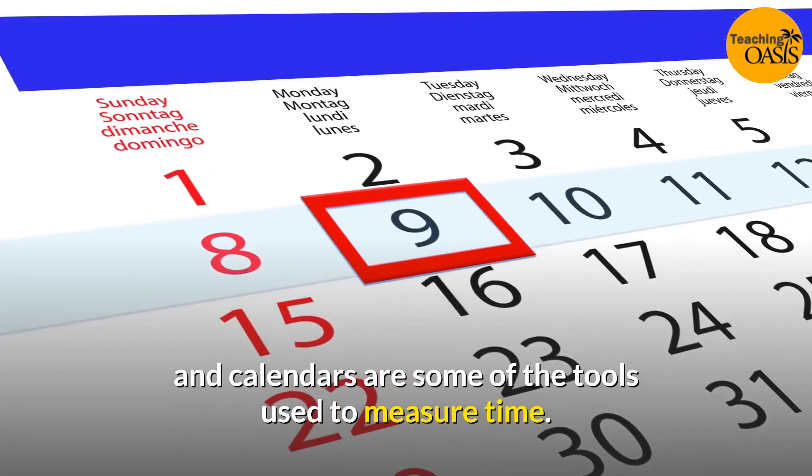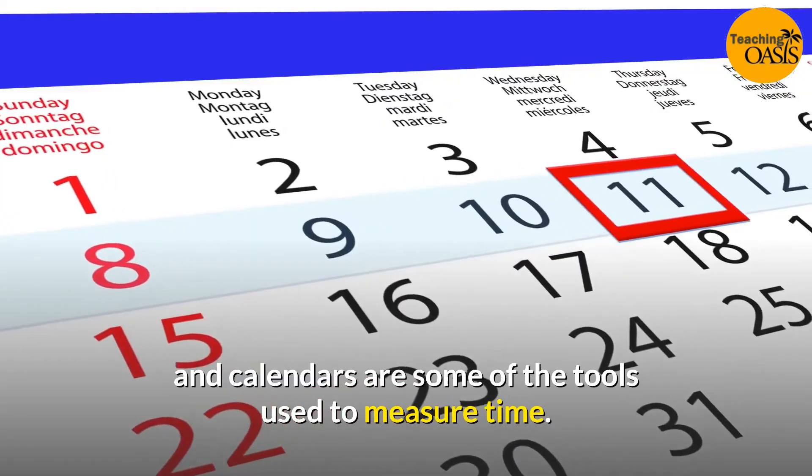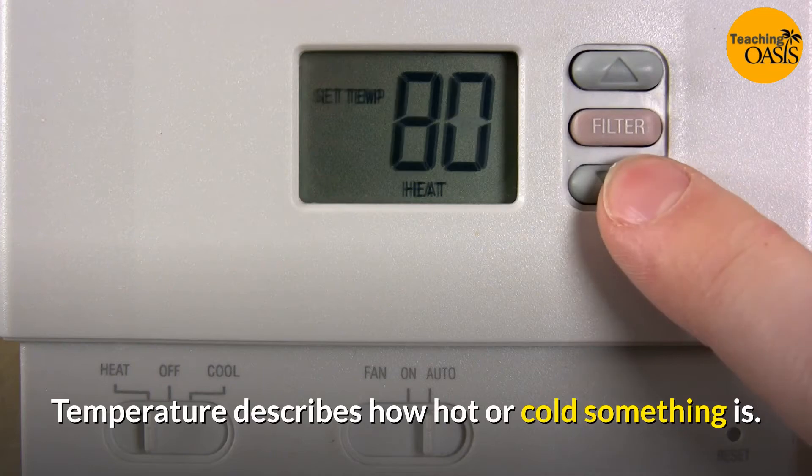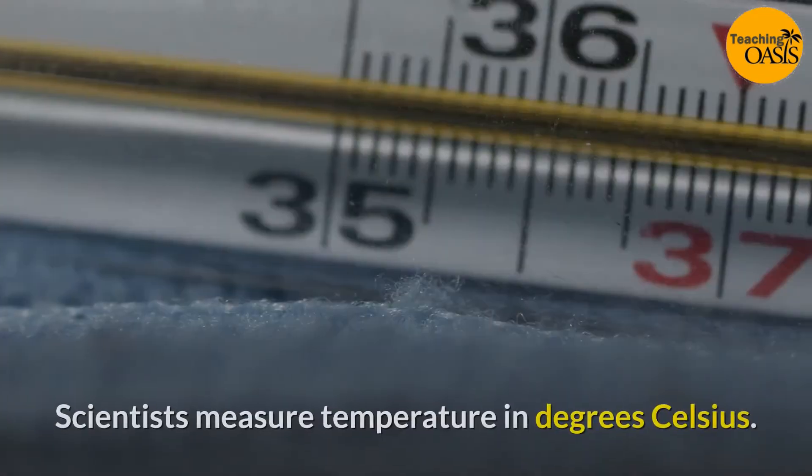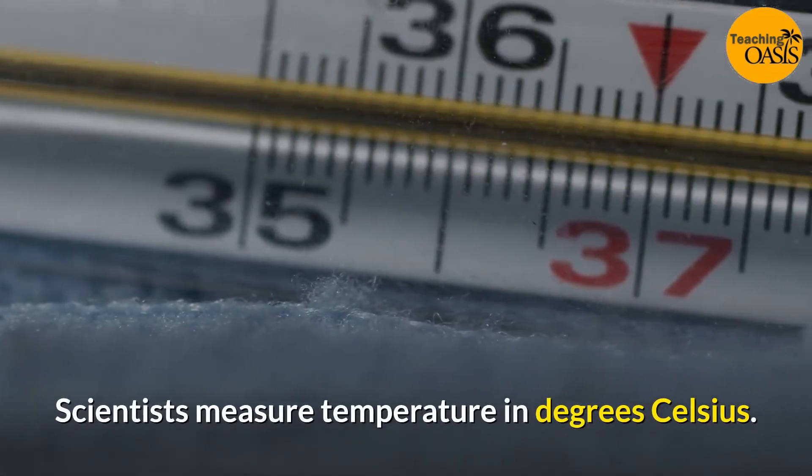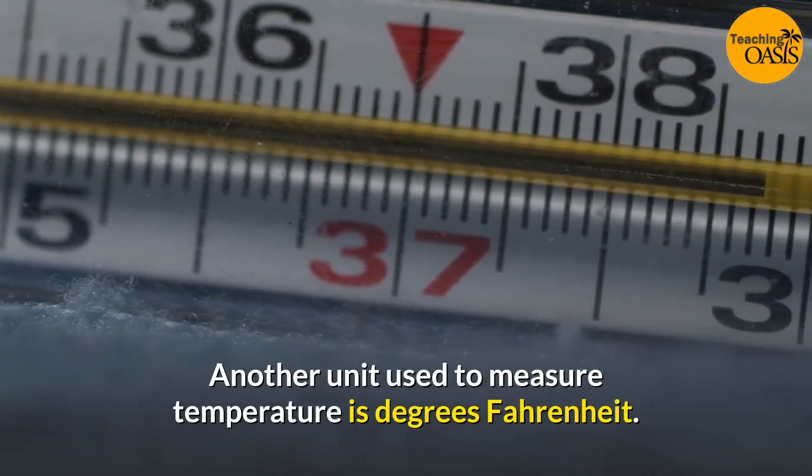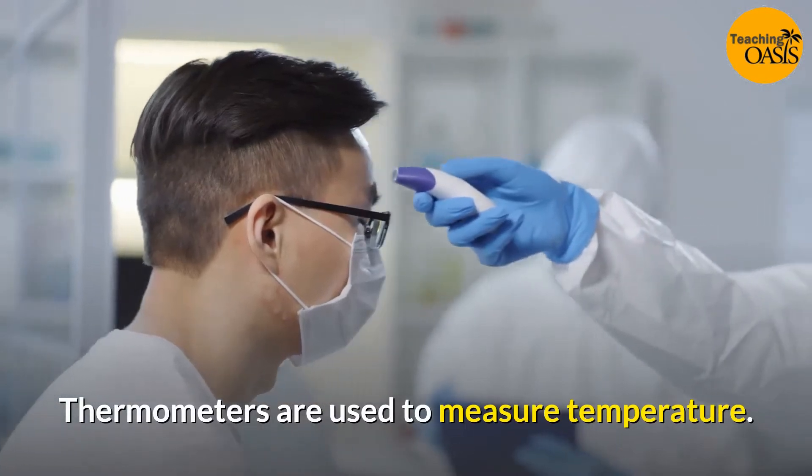Measuring temperature: Temperature describes how hot or cold something is. Scientists measure temperature in degrees Celsius. Another unit used to measure temperature is degrees Fahrenheit. Thermometers are used to measure temperature.